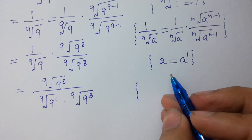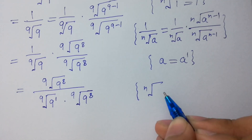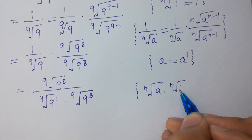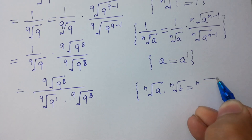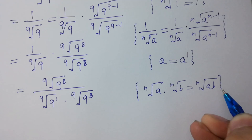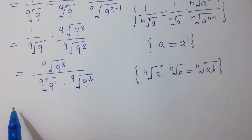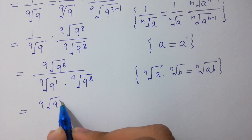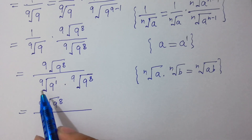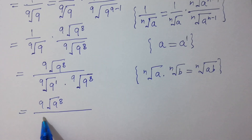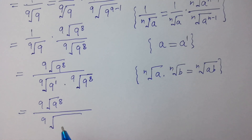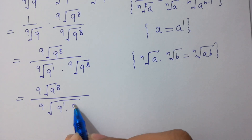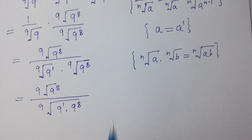Since n-th root of a times n-th root of b equals n-th root of a times b, so 9th root of 9 to the power 8, as it is, times 9th root of 9 to the whole power — 9th root of 9 to the power 1 times 9 to the power 8.